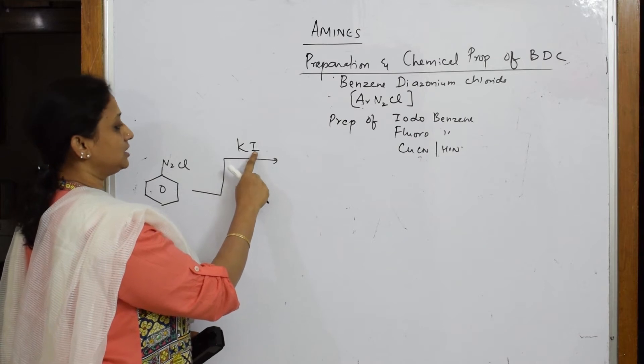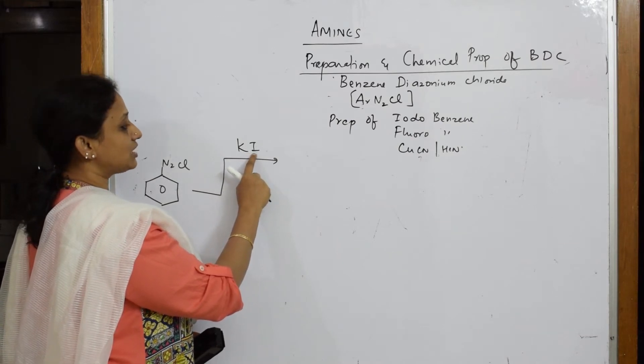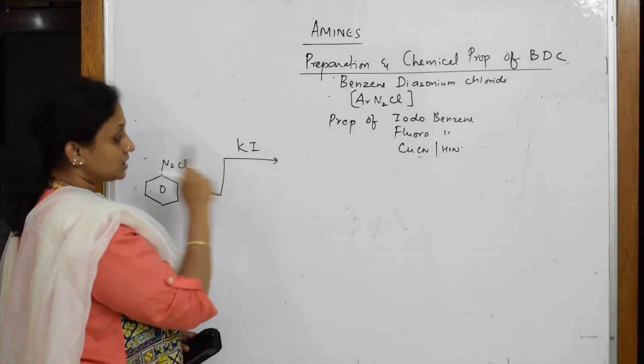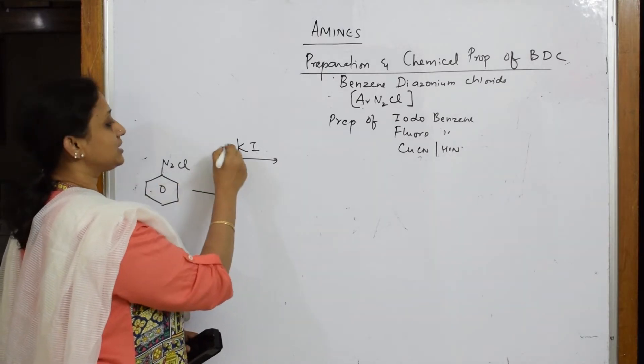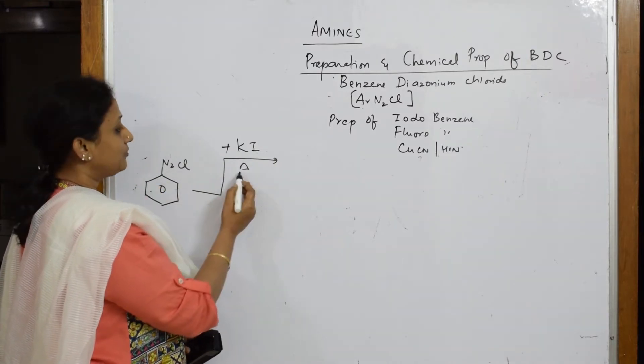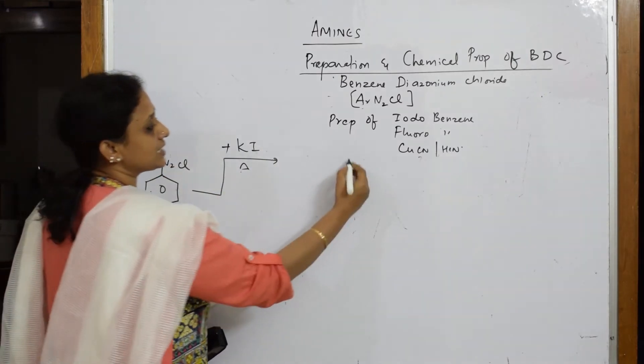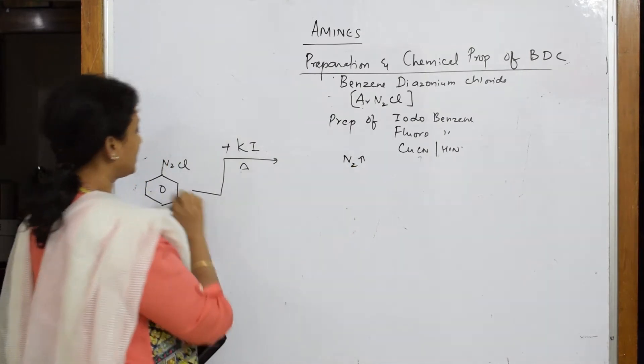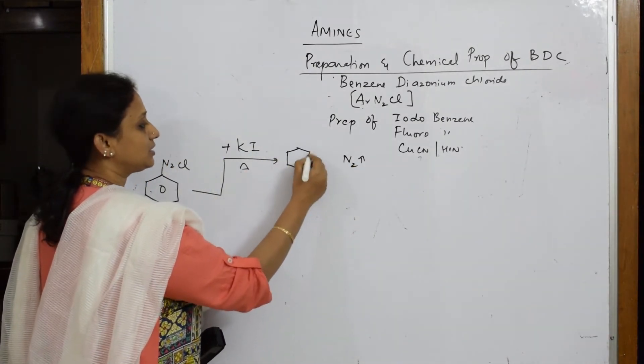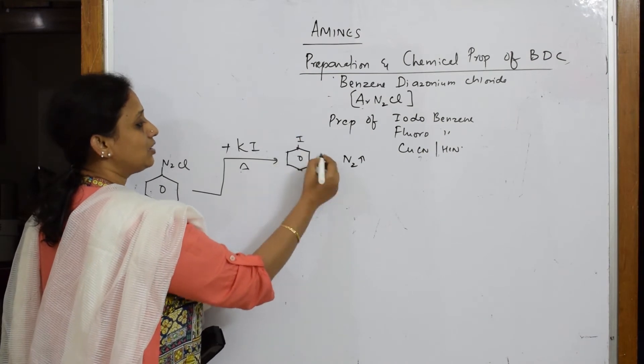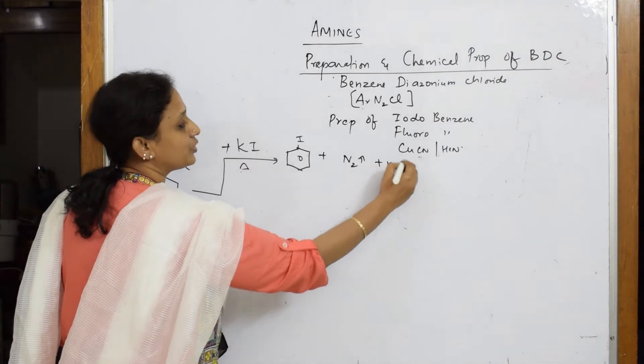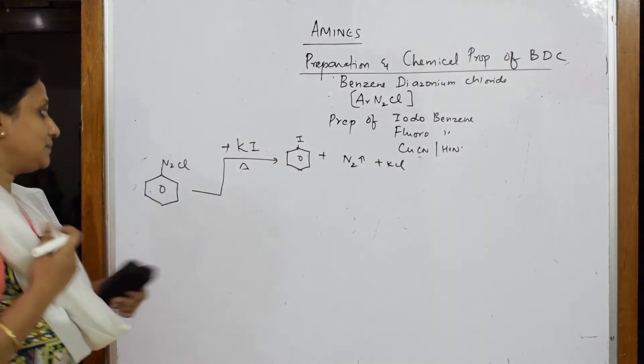The reagent you are going to use is potassium iodide, KI. This potassium iodide has iodine as a nucleophile. When you are heating BDC with KI, your nitrogen gas escapes out N2. Your Cl is replaced with iodine. You have got iodobenzene. What else is left? You have KCl coming out. This is how you prepare iodobenzene. Simple.